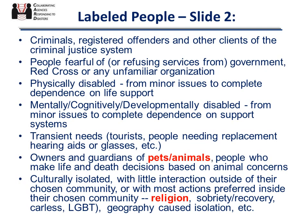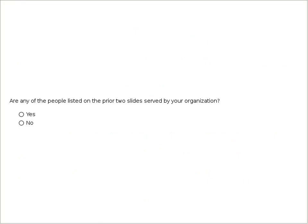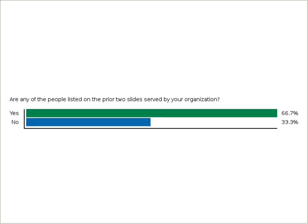We'd like to do a quick poll: did you see on those two slides any of the people served by your organization? We recognize that as nonprofits, public libraries, and charities, many of you are serving constituents — whether patrons at a library, people at a soup kitchen, or people you serve in an educational capacity. The results show the great majority of you are in some capacity serving some of those people listed.